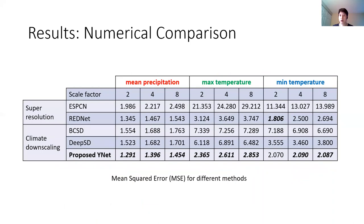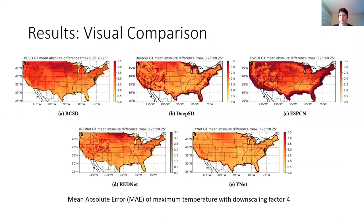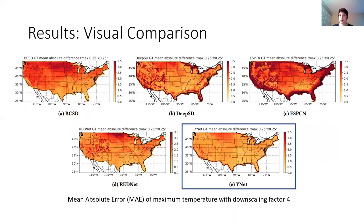We compare our method with four other methods: two are for image super-resolution, which are ESPCN and REDNet, and the other two are for climate downscaling, which are BCSD and DeepSD. This table shows the mean square error for different datasets and three different downscaling factors. Our method outperforms other methods in most cases. These figures show the mean absolute error of maximum temperature across the United States. The lighter the color, the smaller the error. We can see that our method has the smallest error in most areas.